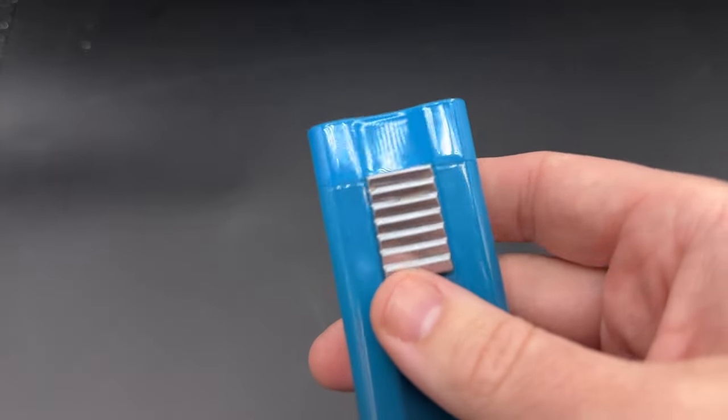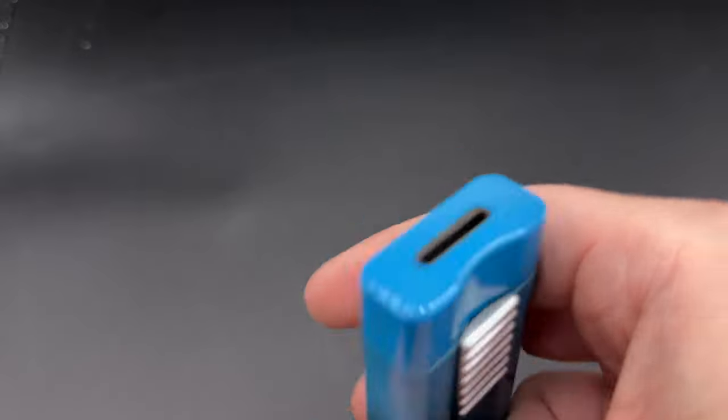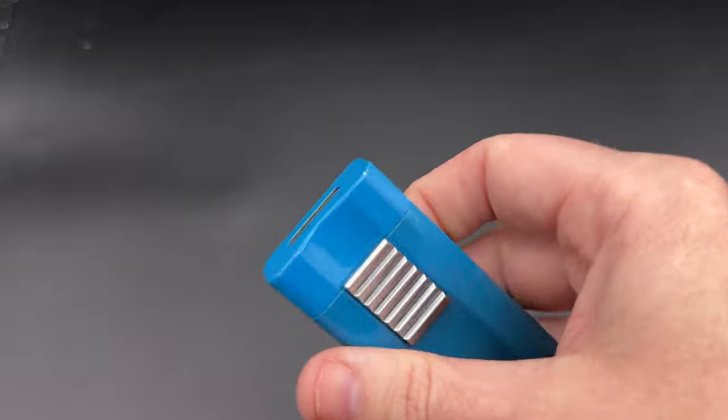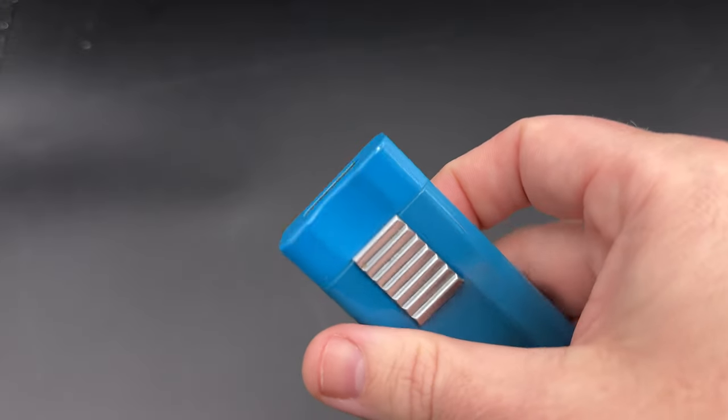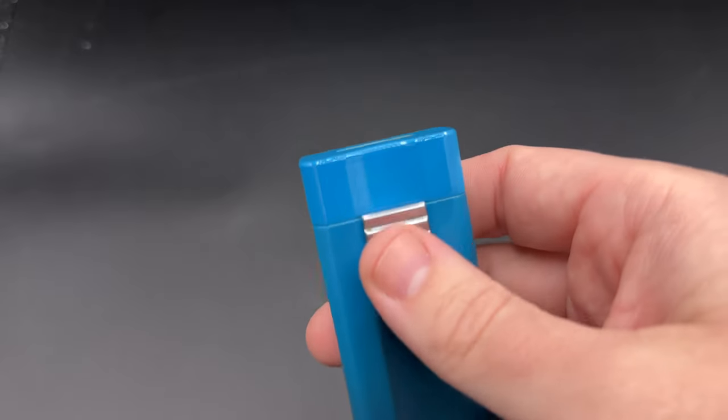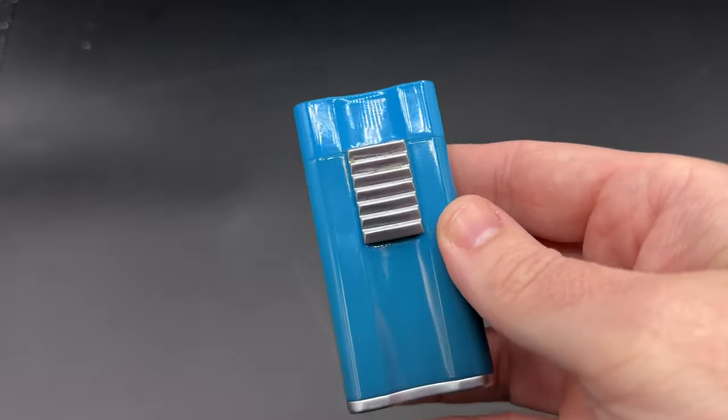Another thing that I was not terribly crazy about with the Chameleon is that the finish does have a slight habit of chipping. As you can see right there, there's also a little chip right there. It does not come with a pouch. So I would highly suggest getting a pouch for this just to keep the body of the lighter looking as good as possible.